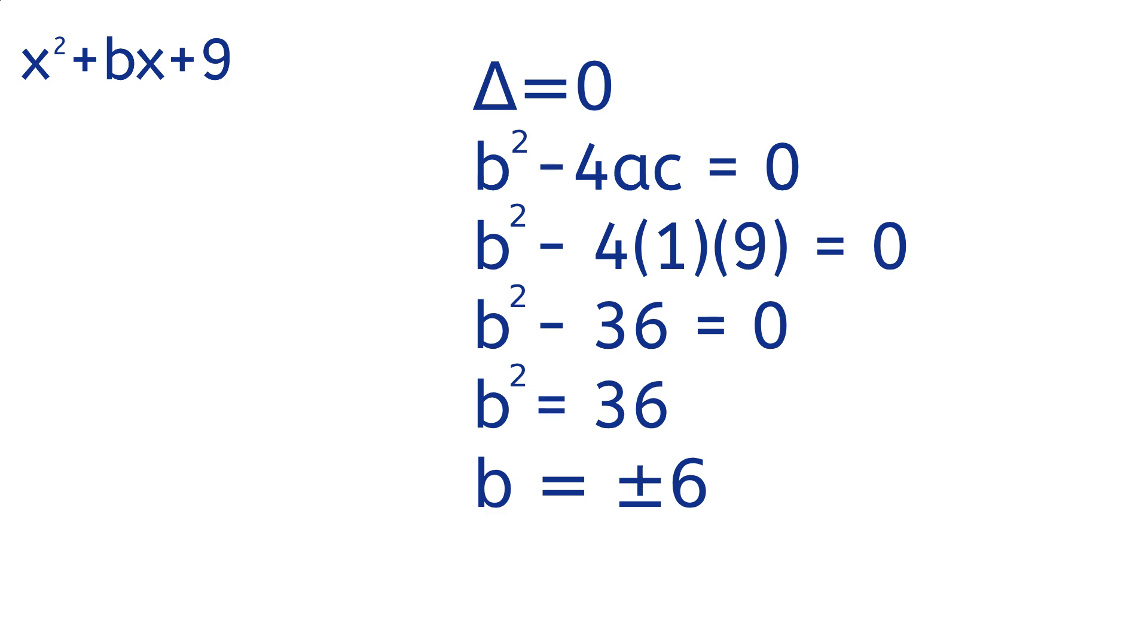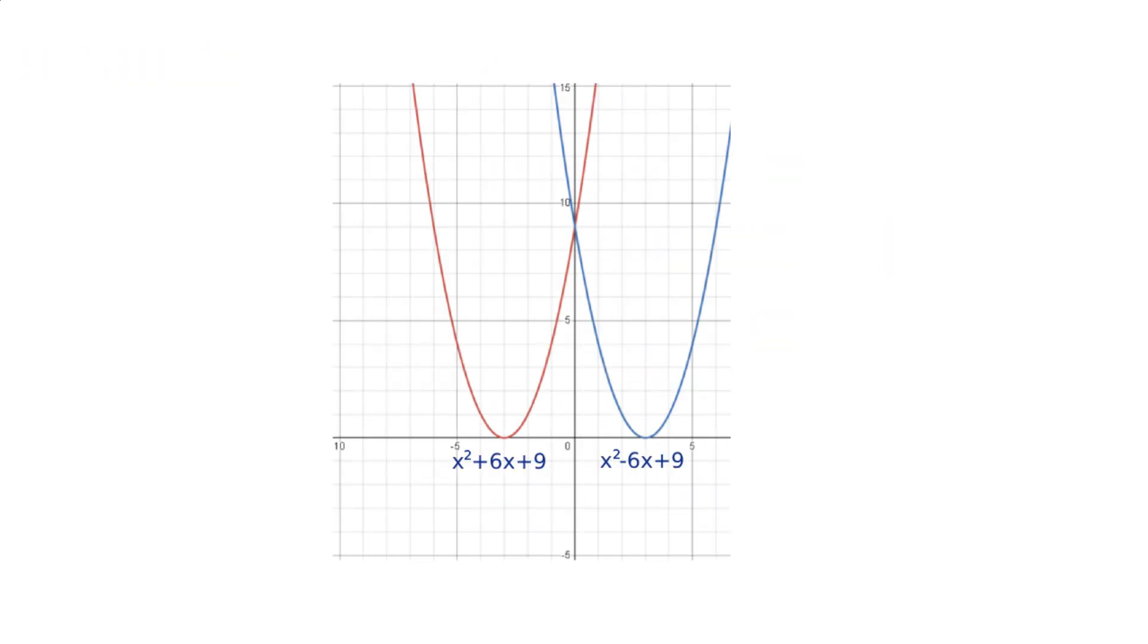Doing some algebra, we get that b squared equals 36, meaning that b equals plus or minus 6. Plugging in both values into the equation, we get two values that give us an equation with only one real root, hence solving the problem.